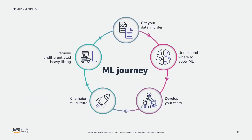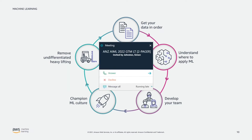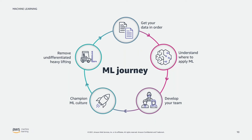We help our customers drive value by talking about the ML journey. It's important to get your data in order first. We'd recommend you start with a data strategy and think about how you modernize your data store to have the ability to scale appropriately for new volumes and types of data. When you think about machine learning, almost 50% or more of the time in getting a model into production is around data — data cleansing, data preparation, labeling, and curation. So it's important that you get your data right first.